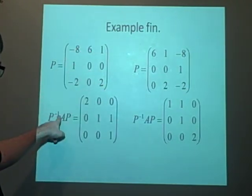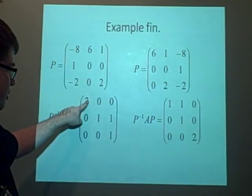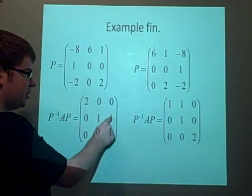And we've got P inverse AP equals this, which is correct. We've got the 2, 1 was repeated, so it keeps the 1 above there.